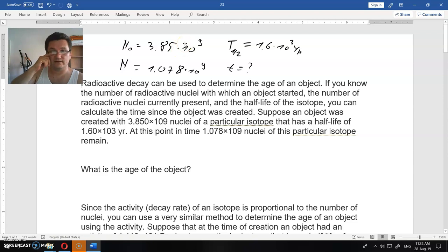After 1600 years, we have not half, but a little more. One billion and 78 million nuclei remain. And what is the time? There is a simple equation that connects those two, and that equation is this.